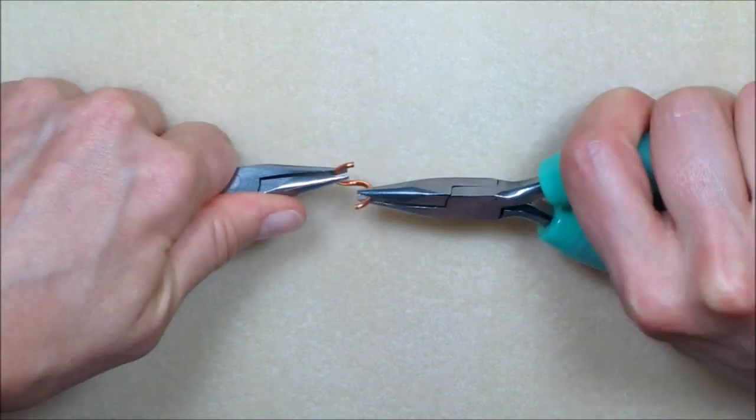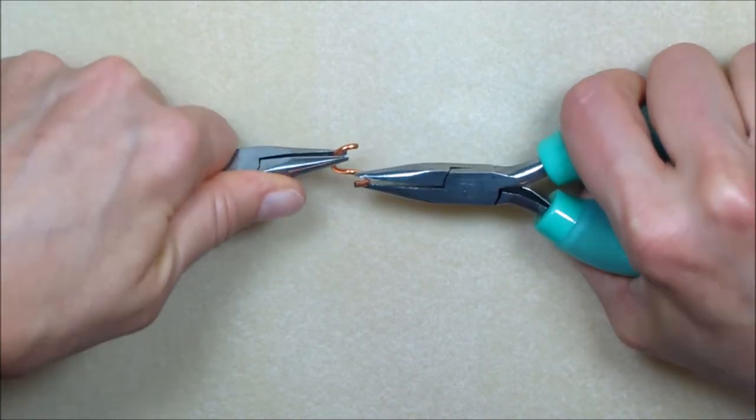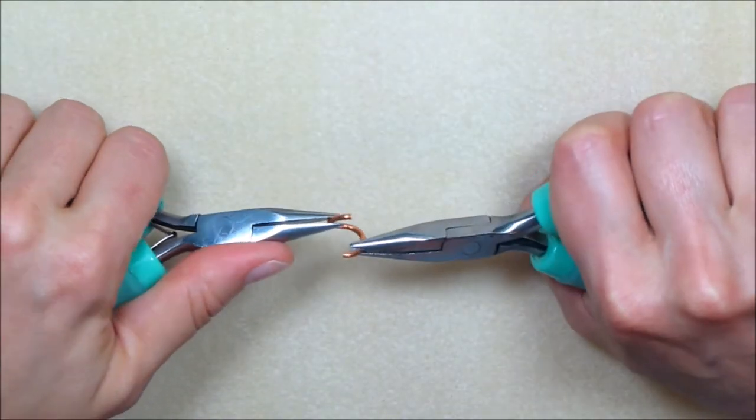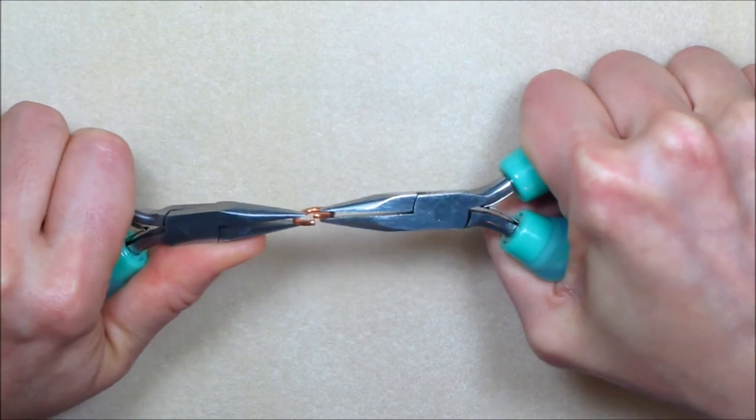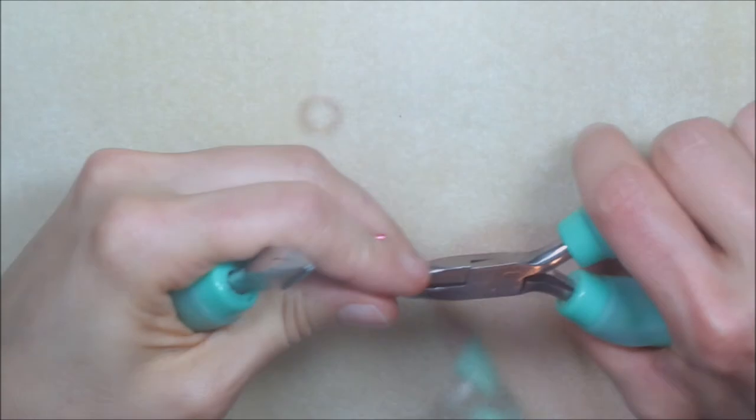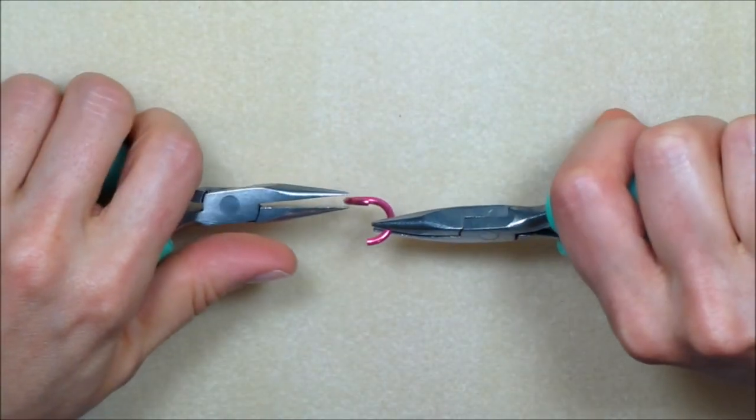To close a jump ring, hold the jump ring firmly with both pliers. Now remember we've got the left plier between 10 and 11 and the right plier between 1 and 2. Twist the right pliers away from you and the left pliers towards you. This will bring the ring ends very close together.